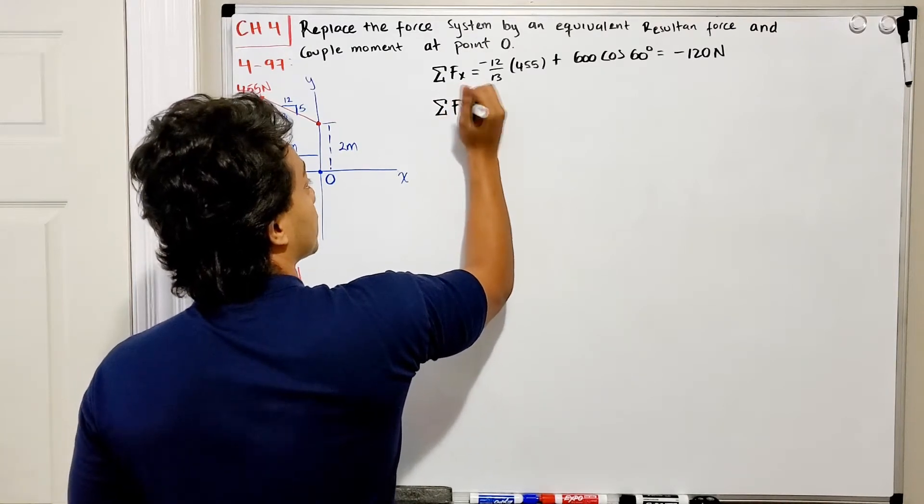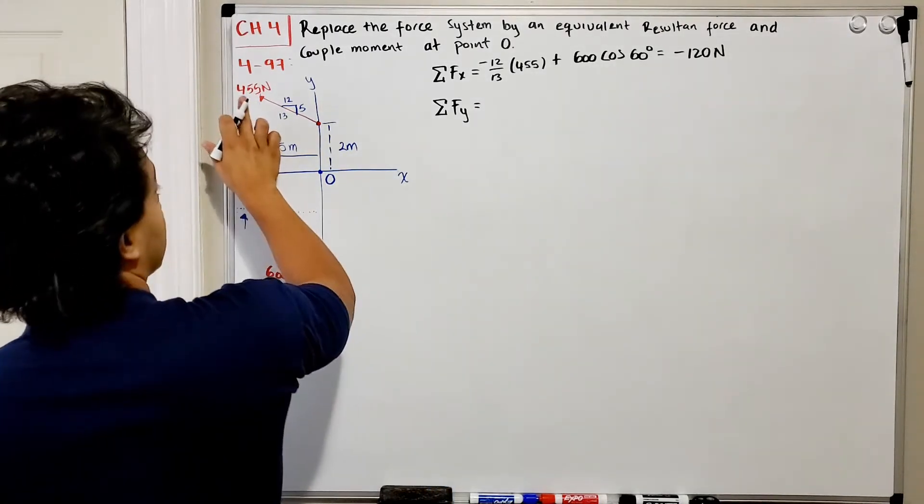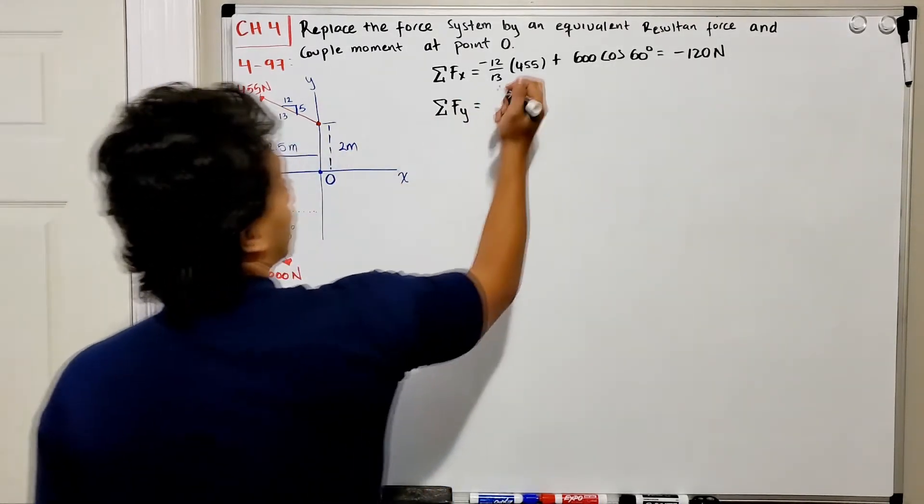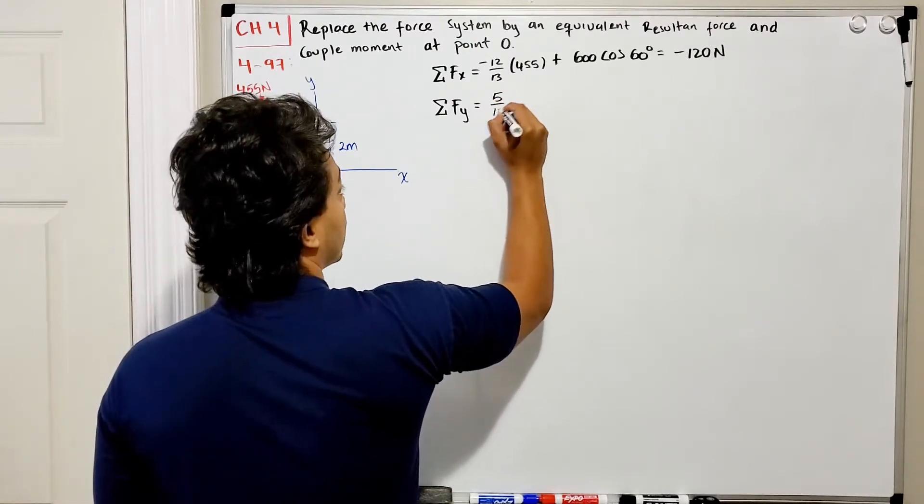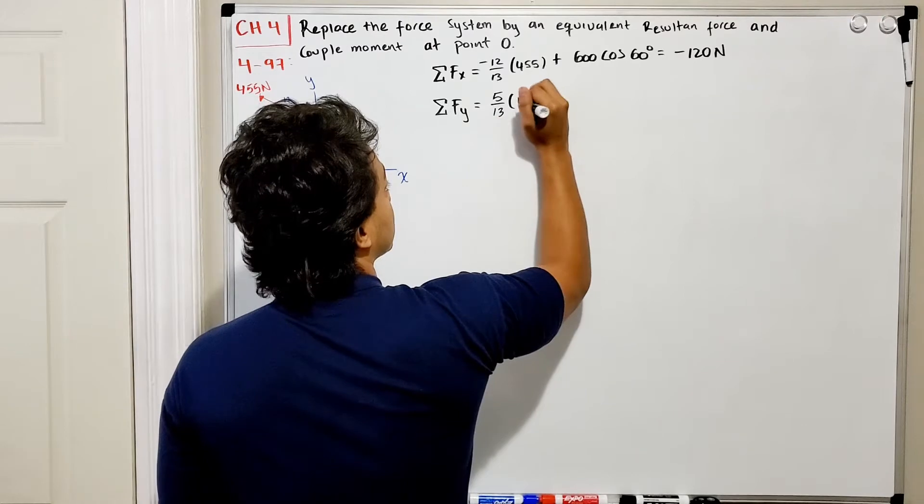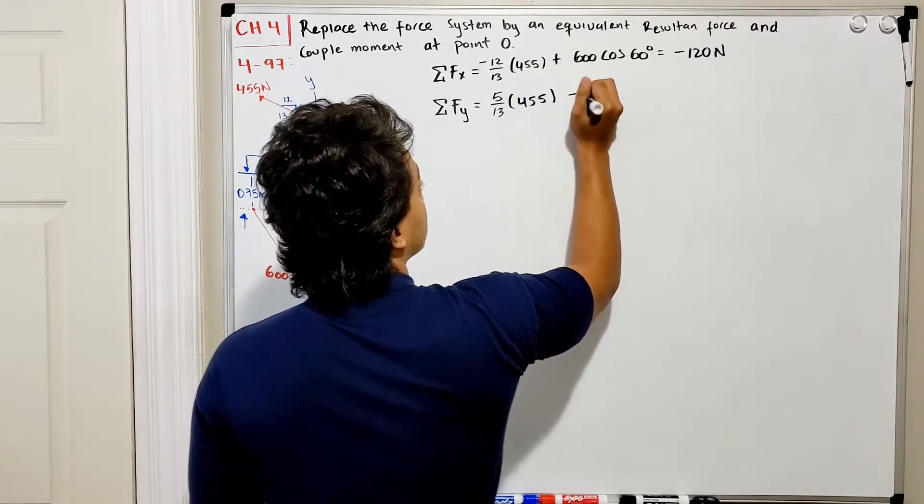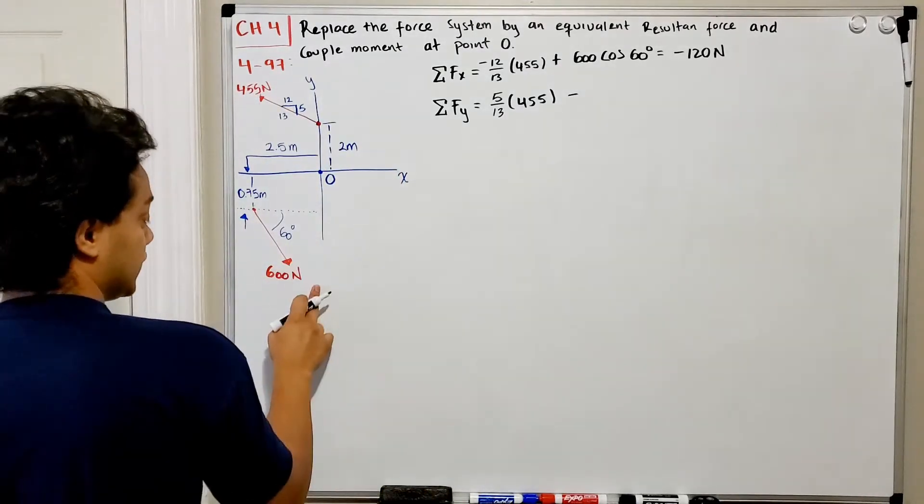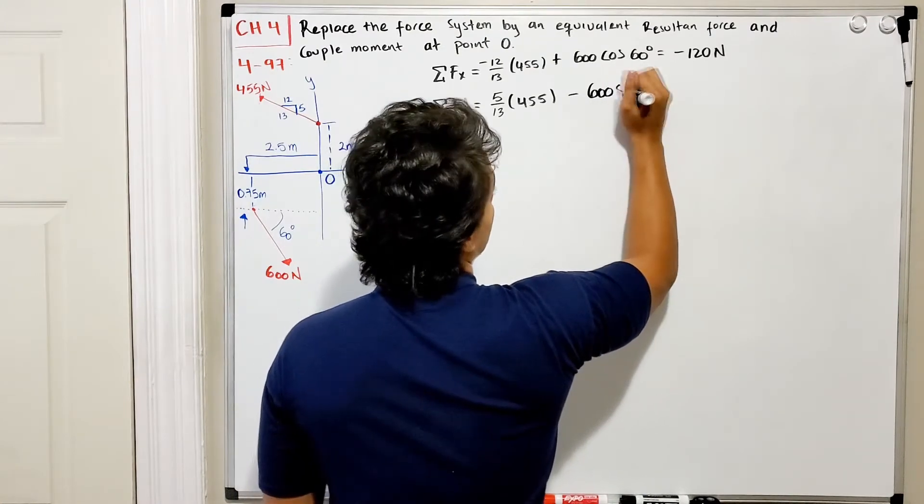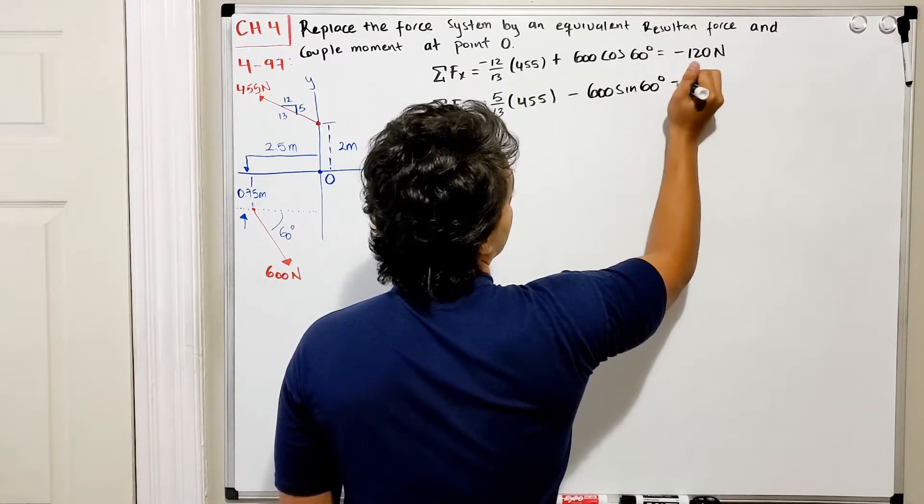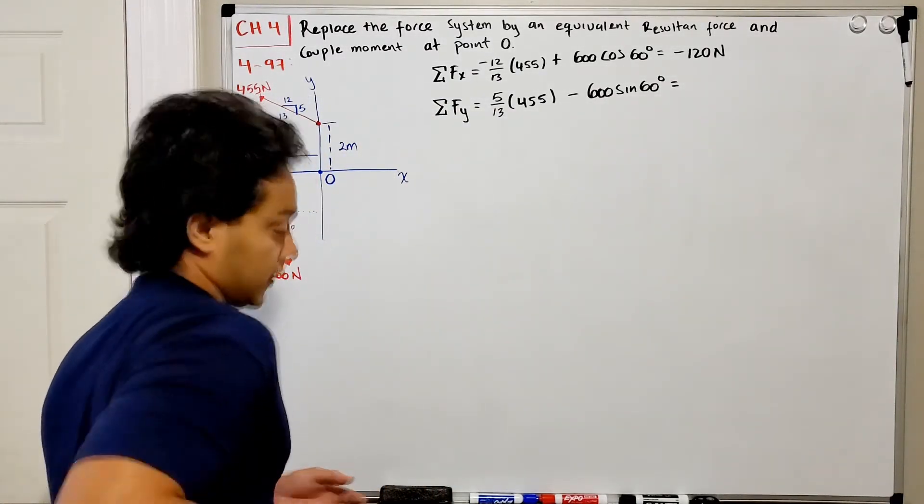Now the sum of forces in the Y direction. I have positive going up for my 455, which is 5 out of 13 of this force, 455. Then minus because this force is going down: 600 sine of 60 degrees.